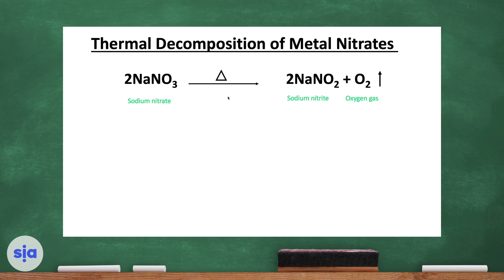Metal nitrates can also decompose by heat and give different products. Sodium nitrate is a good example — it is broken down by heat into sodium nitrite and oxygen gas.